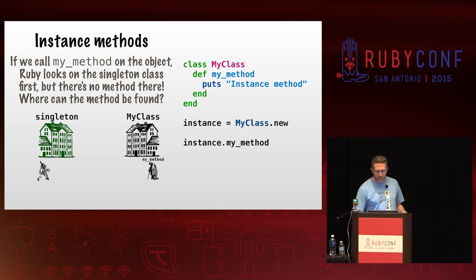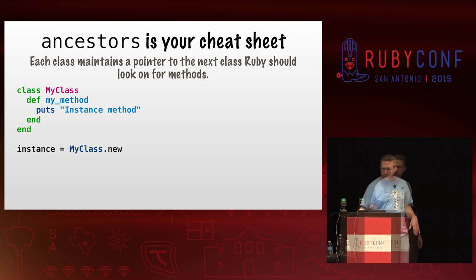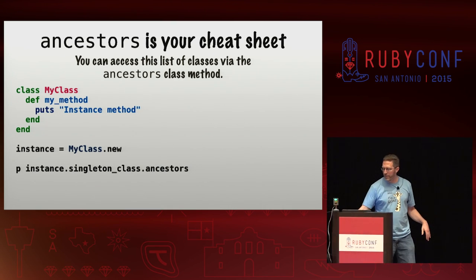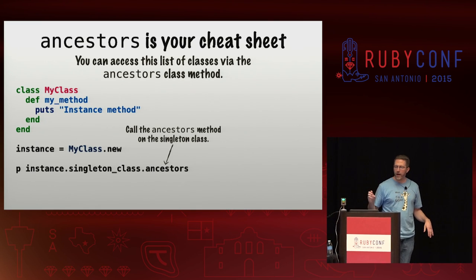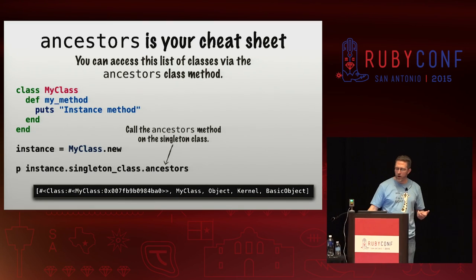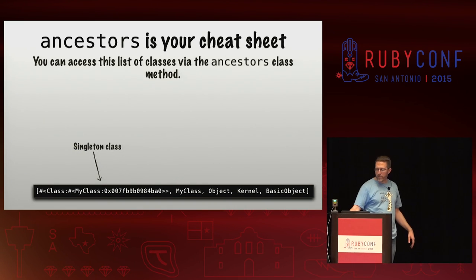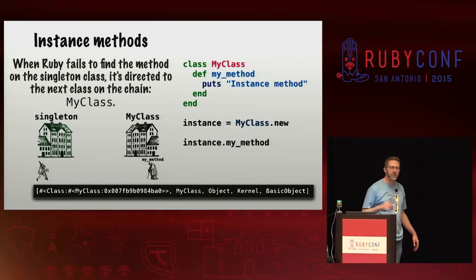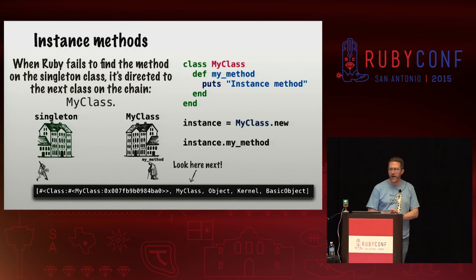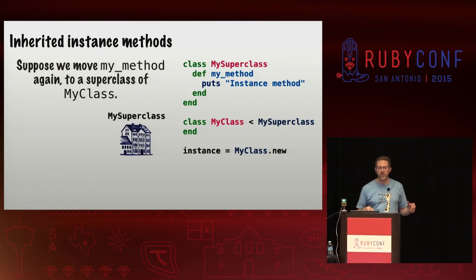If we call my method on the object, Ruby will look on the singleton class first, but there's no method by that name there. Each class maintains a pointer to the next class that Ruby should look on for methods. The ancestors method is your cheat sheet for understanding the places that Ruby is going to look for a given method. So we create an instance of my class, call singleton class on that, and call the ancestors method. Our singleton class is up first, followed by my class — that's where Ruby looks next when it doesn't find the method on the singleton class.